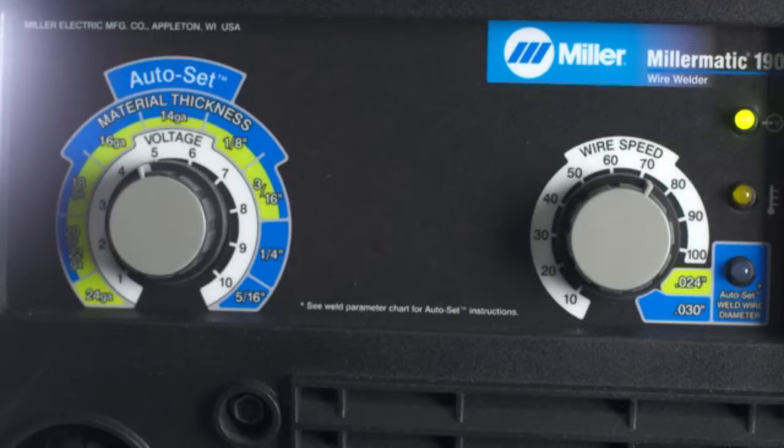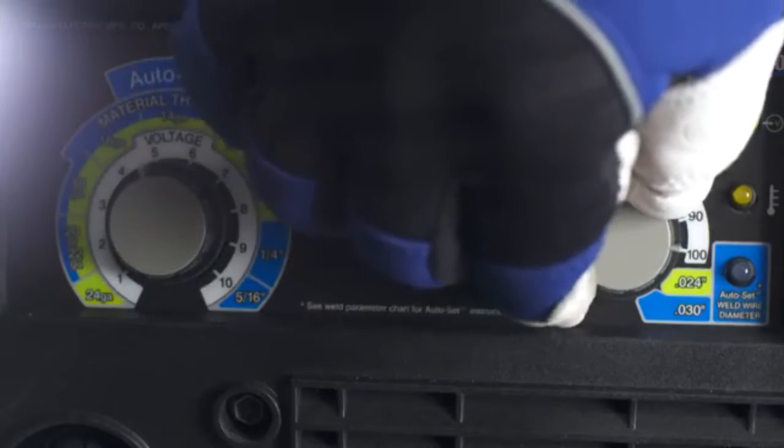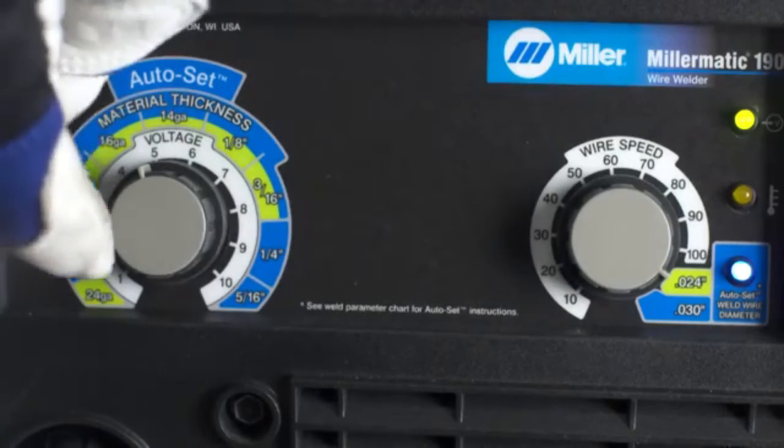Let's take a look at parameter setup now. The Auto Set feature makes setup quick and easy. On the Millermatic 141 and 190, this feature only works with mild steel and 7525 shielding gas. First, select your wire diameter and then your material thickness.